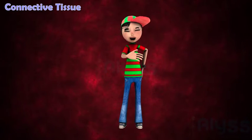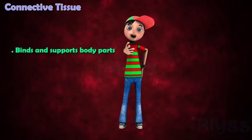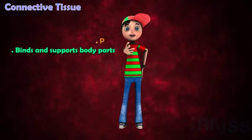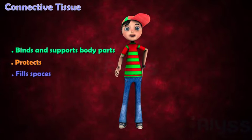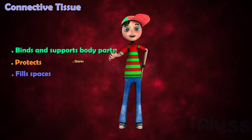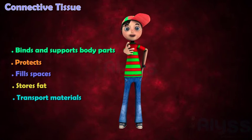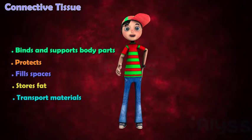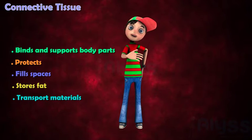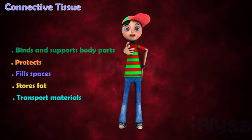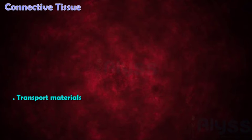Connective tissue binds and supports body parts, protects, fills spaces, stores fat, and transports materials. It contains both living and non-living materials. It is of the following types: number one, loose connective tissue, which is further of three types.